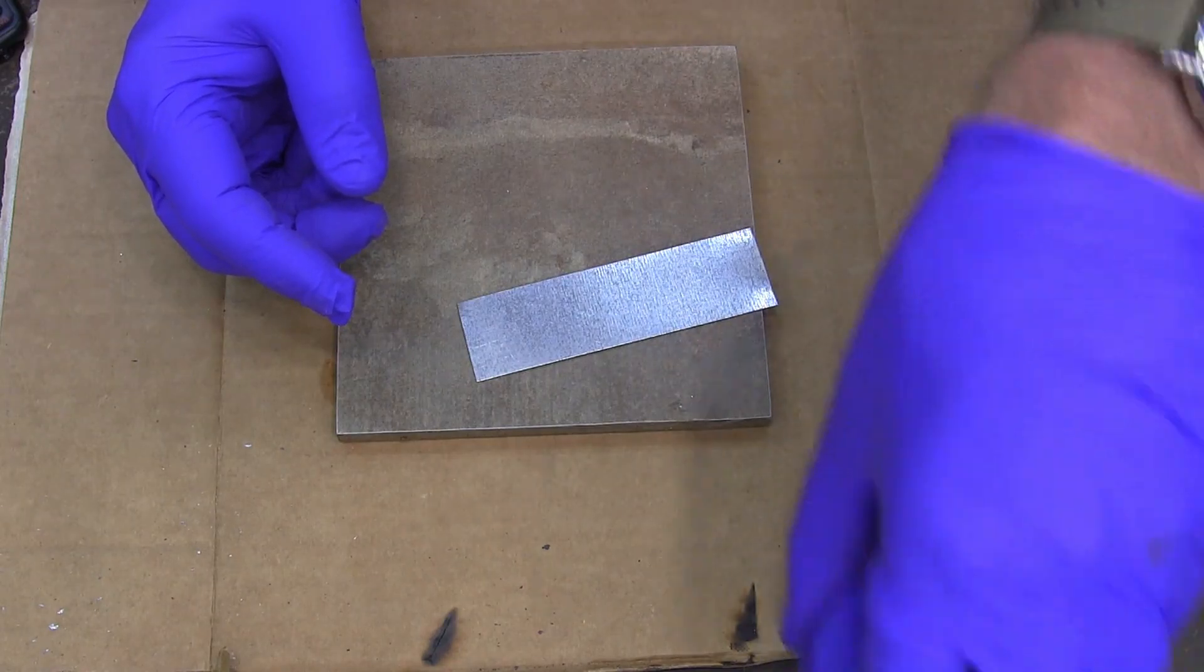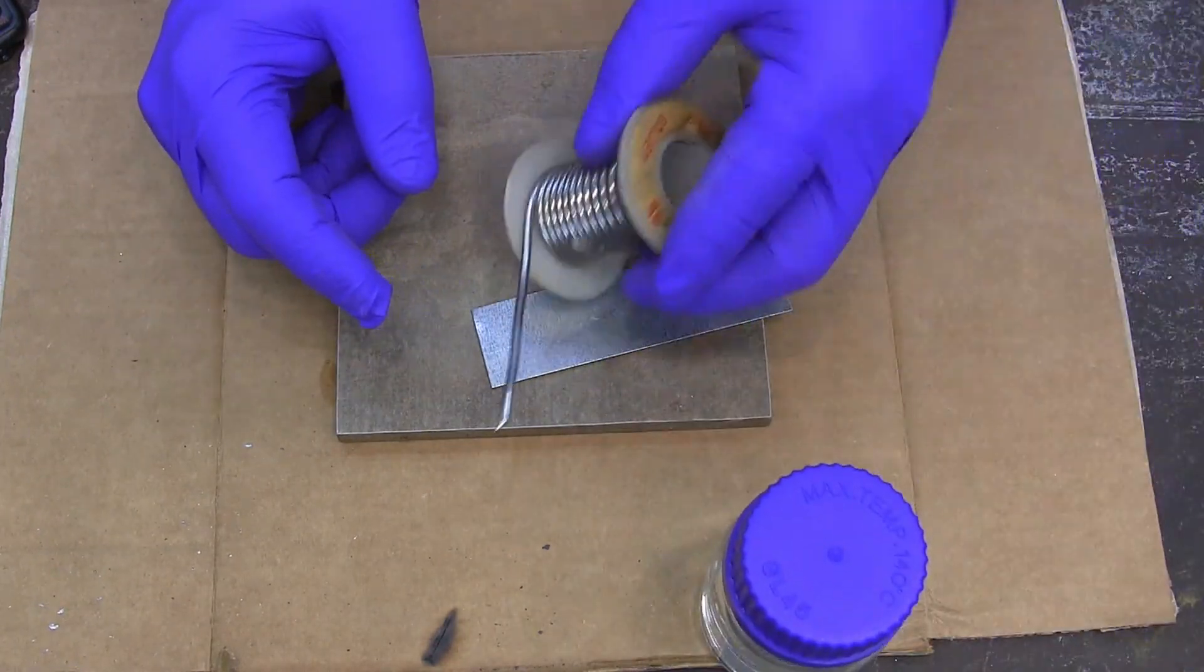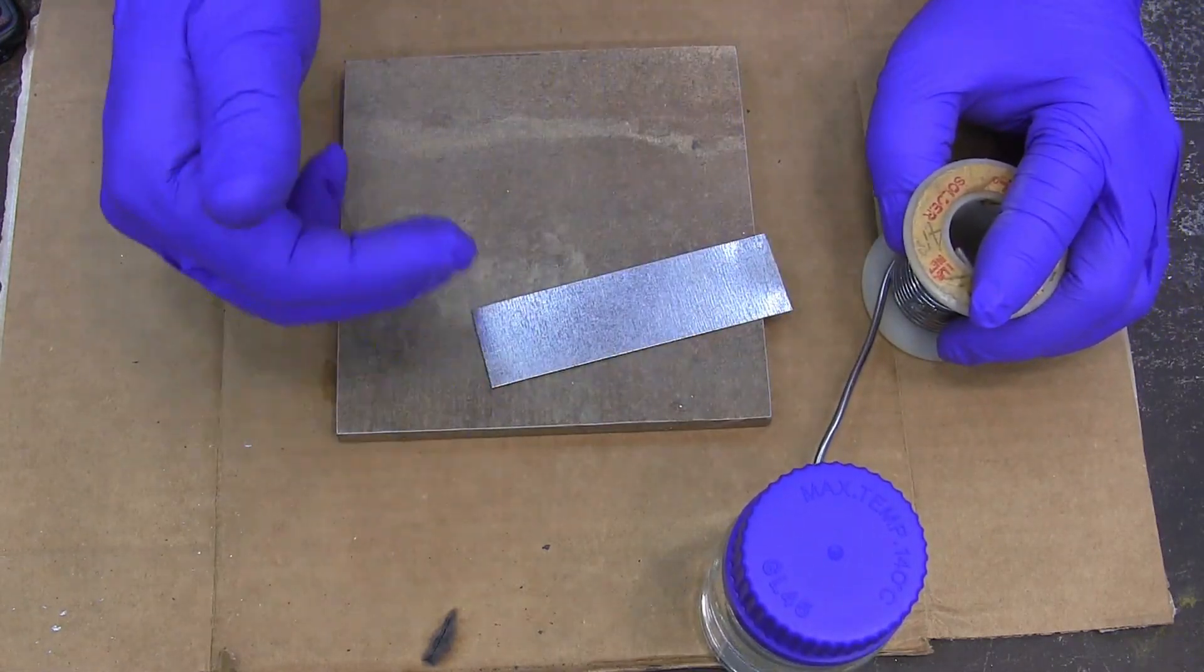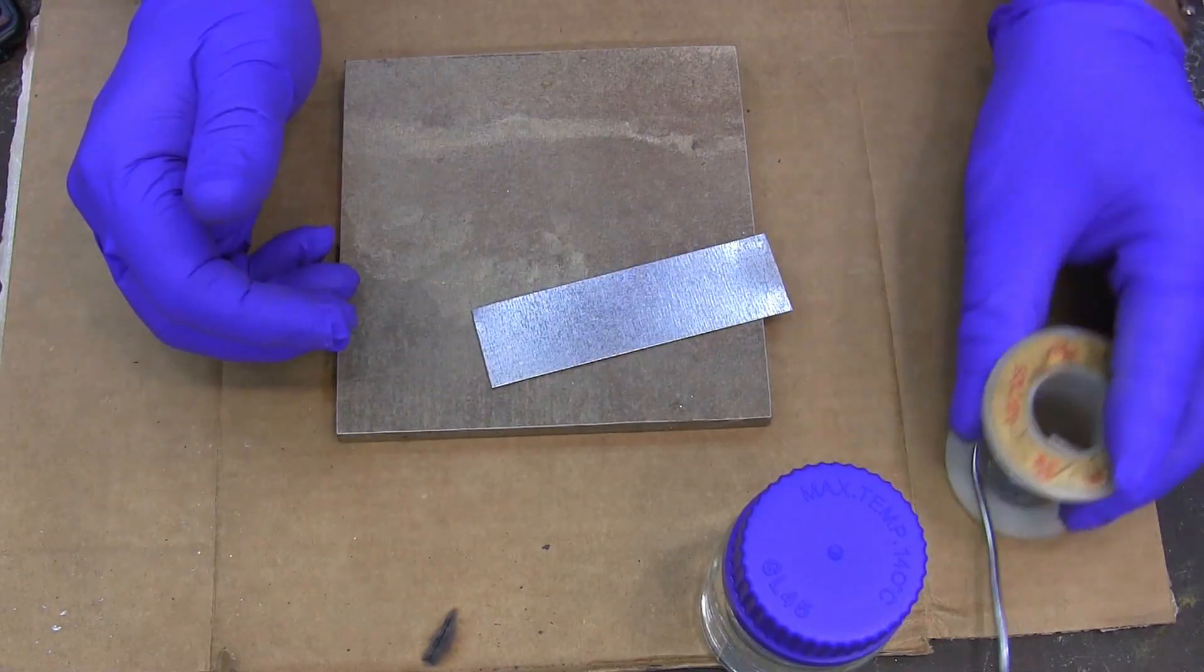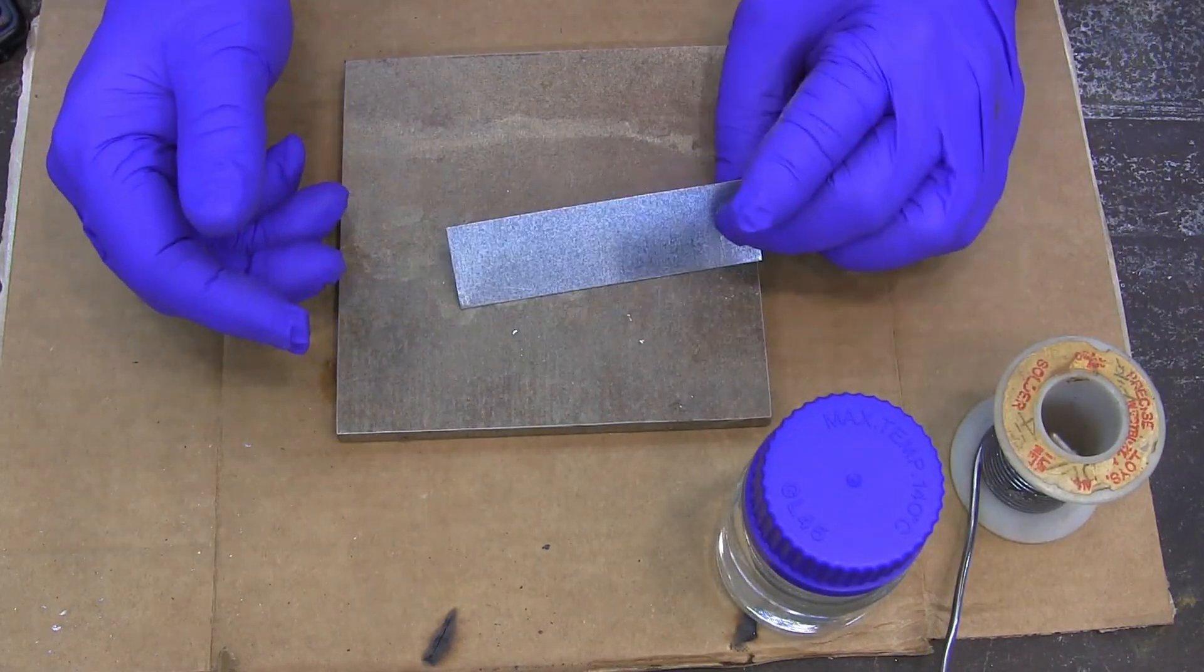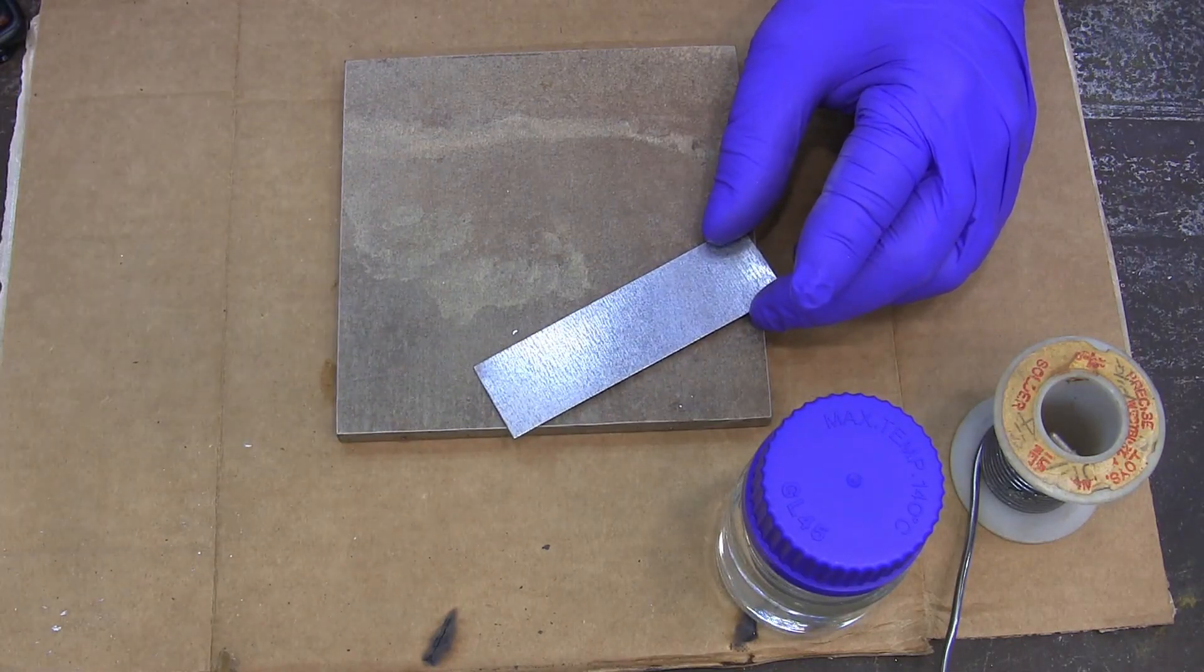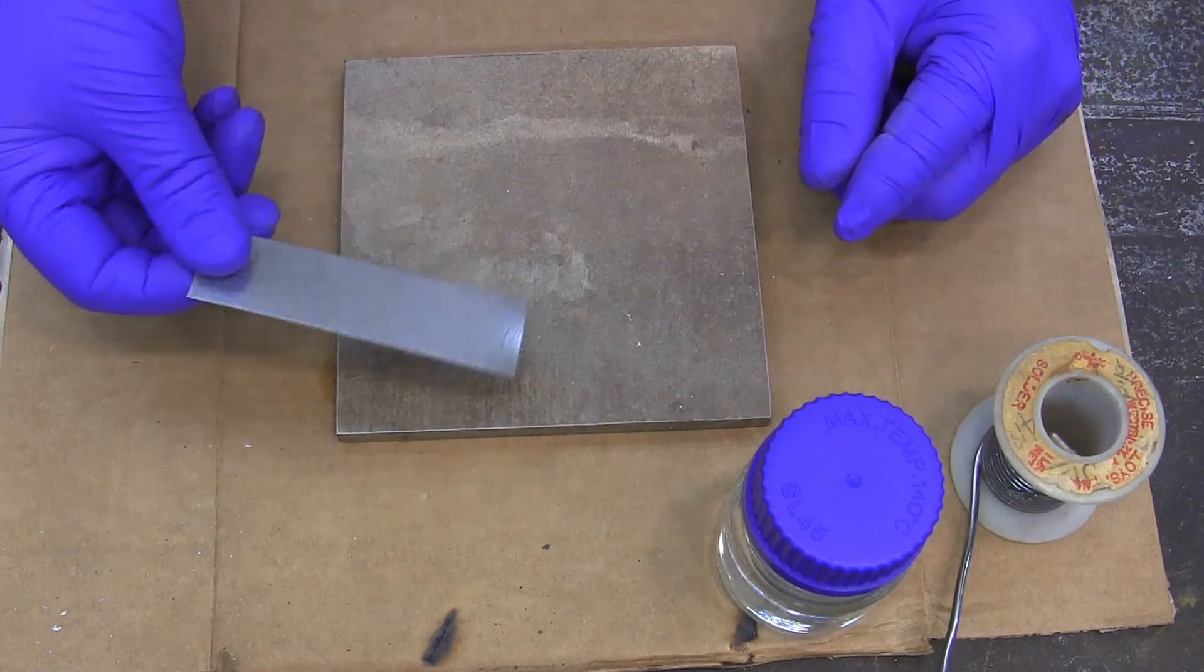And then your flux is going to clean that further so that your solder will stick. If your solder is not sticking, then your surface isn't clean enough. It could be that you need more flux, or maybe you started out with some metal that was a little too dirty. Now, you also have to get enough heat to make that flow. All right, let me cut a little small piece and we'll solder some metal.